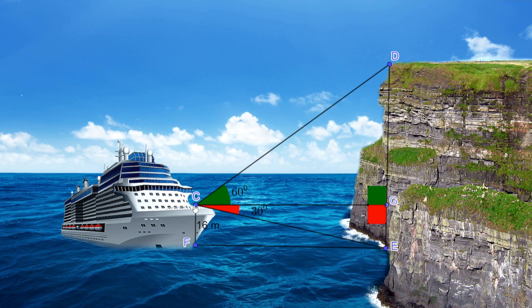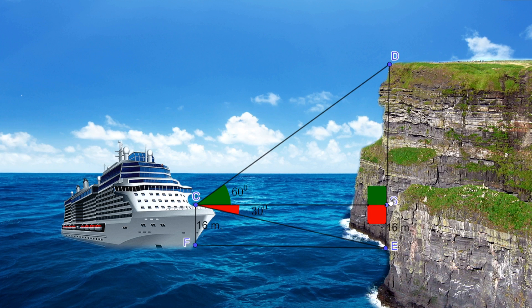The figure CGEF is a rectangle, where CF equals 16 meters and GE equals 16 meters.